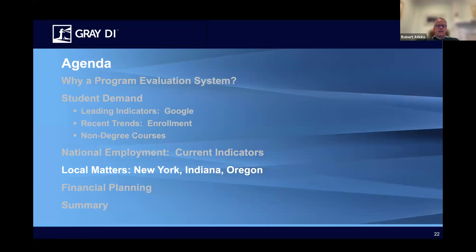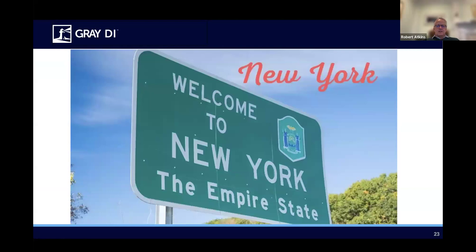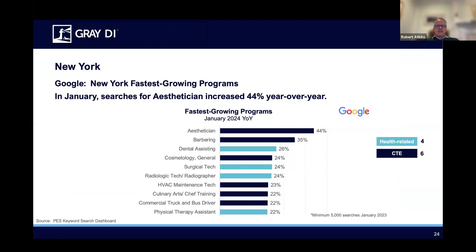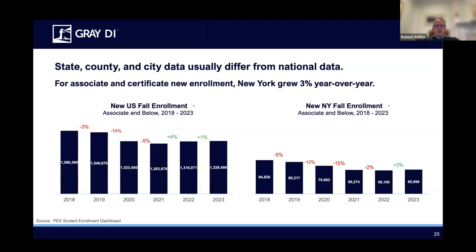Now let's take a look at what this data looks like in three states: New York, Indiana, and Oregon. In New York, what's growing? Esthetician is leading it — skin care specialists — barbering, cosmetology among the CTE programs, plus HVAC, Culinary Arts, and Commercial Truck and Bus Driver. Almost everything is different if you go from one state to another, but a handful will be consistent — commercial truck and esthetician being among them. In healthcare in New York, we've got four programs on the list: Dental Assisting up 26%, Surgical Tech up 24%, Rad Tech up 24%, and Physical Therapy Assistant up 22%. Overall enrollment in New York is actually doing better than the national average, up 3%.